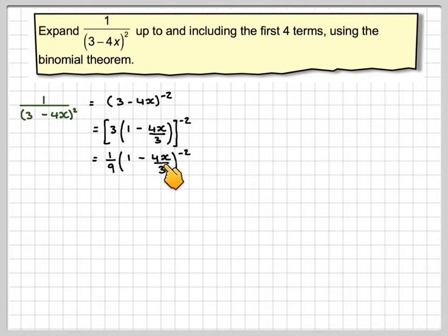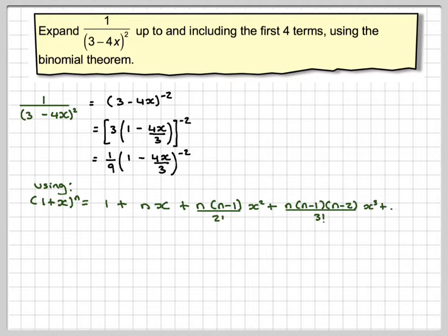So now we expand this bit here using the binomial theorem. Using (1+x)^n equals this, which we should know by now.